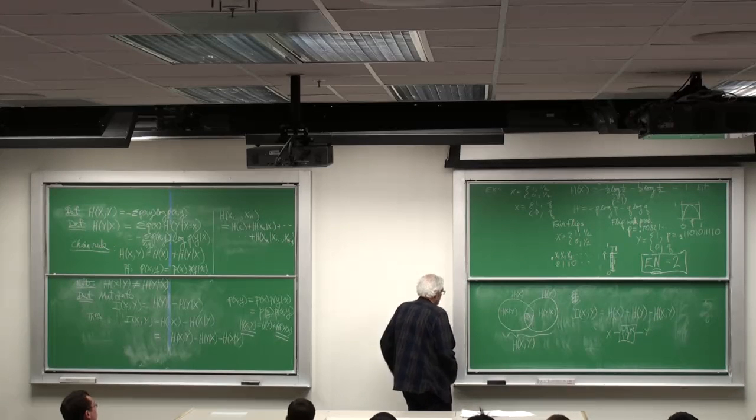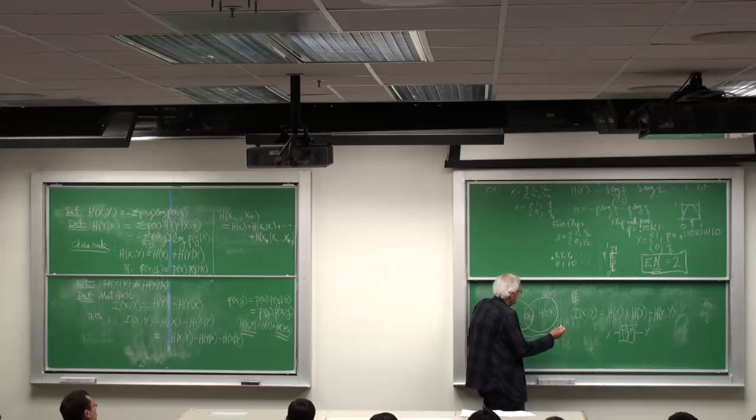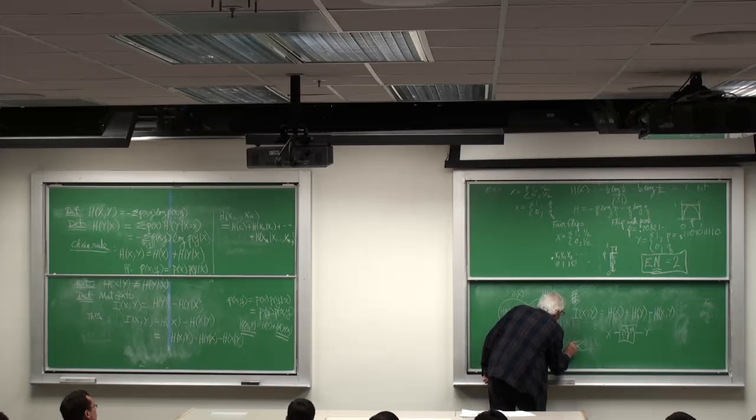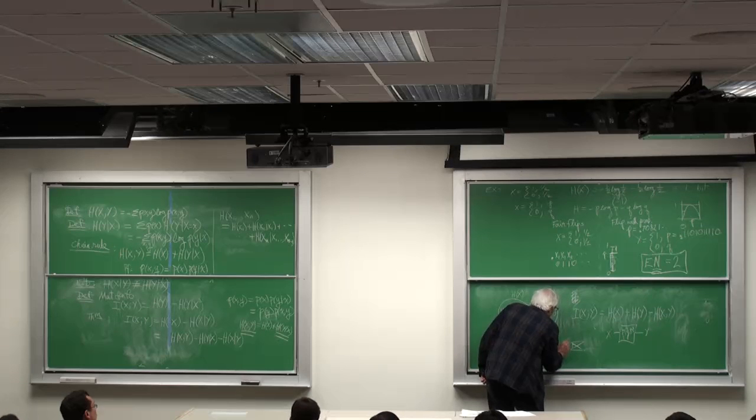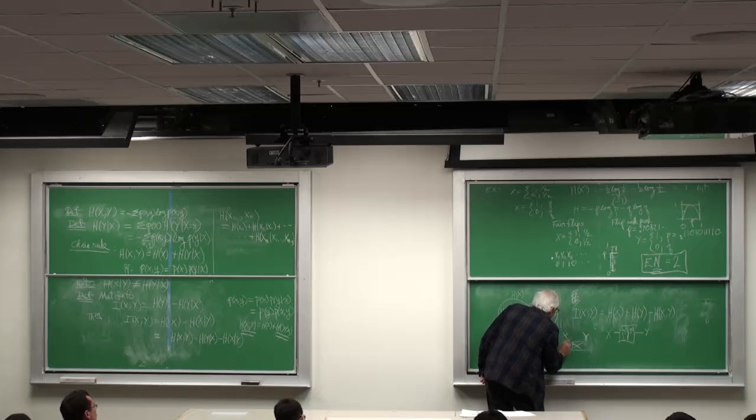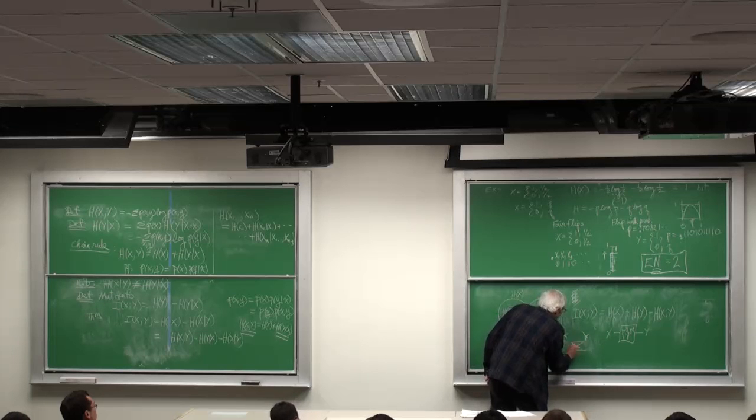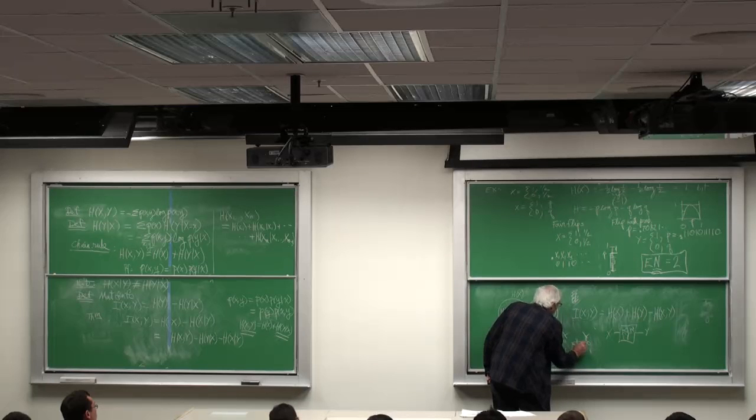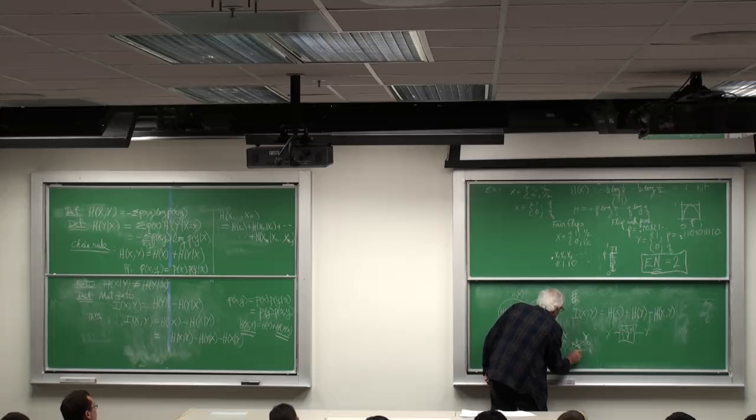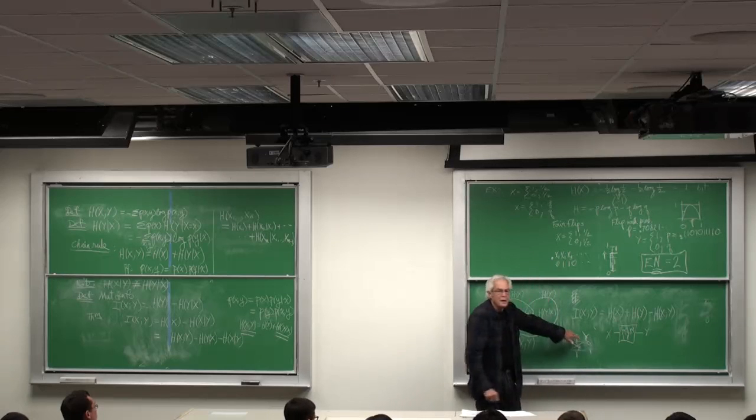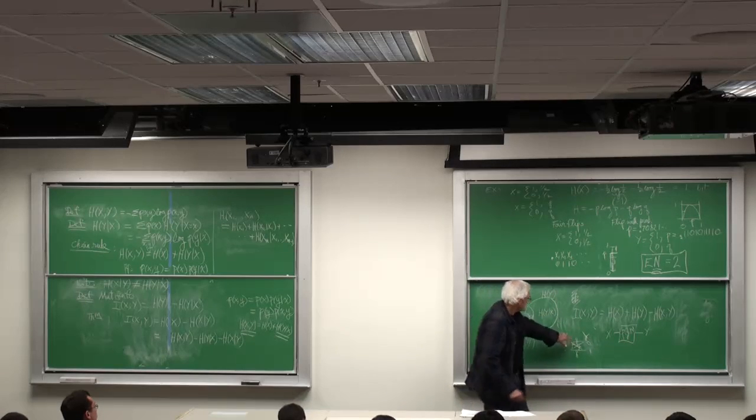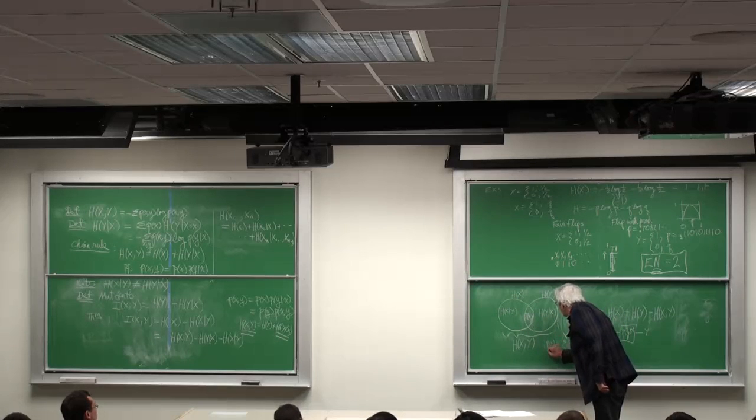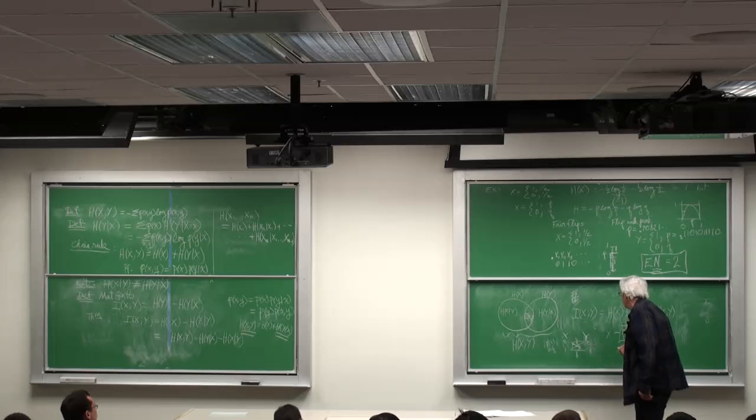So for example, if I have a channel in which I have X here and Y here, 0, 1, 0, 1, this is Q, P, Q, we call it a binary symmetric channel. And P of X equal a half for each value of X.